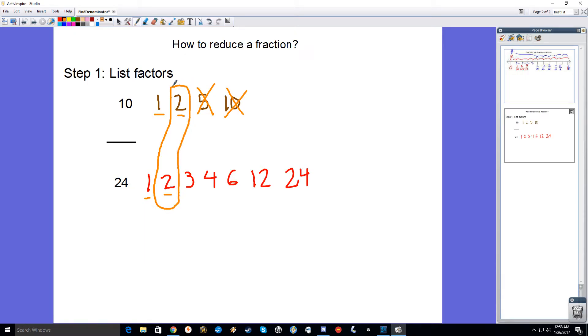So 10 divided by 2 is 5, 24 divided by 2 equals 12. And so 10 24ths reduces to 5 12ths. And that's all you need to know about how to reduce a fraction.